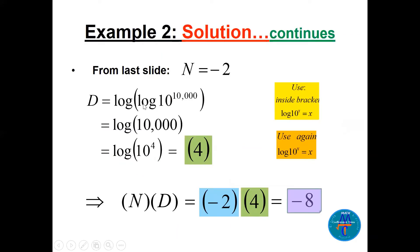For D, we have log of log base 10 of 10,000. Inside the bracket, log base 10 of 10 to the power x equals x, so this becomes 10,000, which is 10 to the power 4. So D equals 4. Therefore N times D equals minus 2 times 4, which is minus 8.